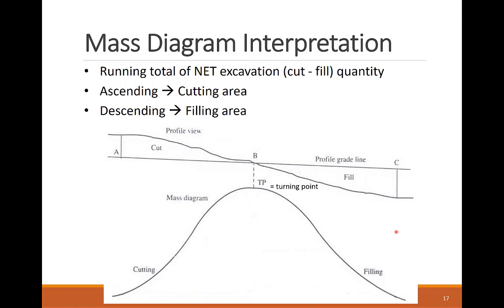Now we can plot the mass ordinate to have the mass diagram. The mass ordinate is shown on the vertical axis and the project length, or stations, is shown along the horizontal axis. I'm showing here a profile view and its corresponding mass diagram, which both provide a full story of the cut and fill work. Starting from the left, the profile shows a cut segment from point A to B, and then a fill segment from point B to C. You can see that the mass diagram is ascending in the cut segment, and then flattening at the point where the profile and natural grade intersect, and then descending in the fill segment.